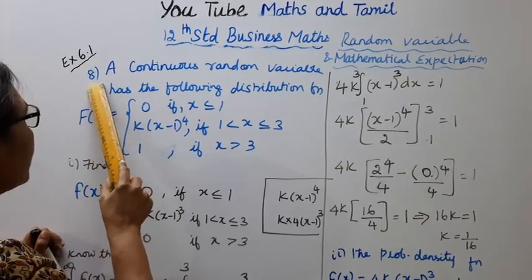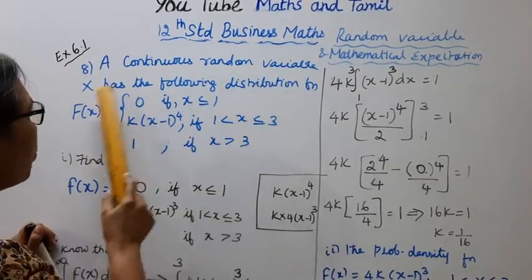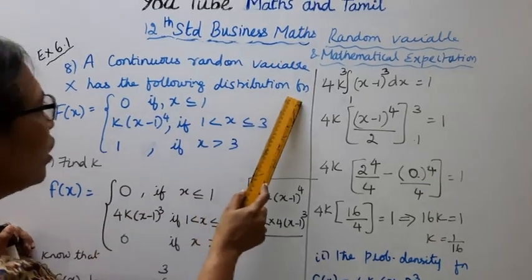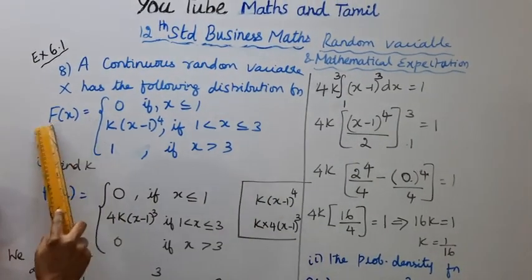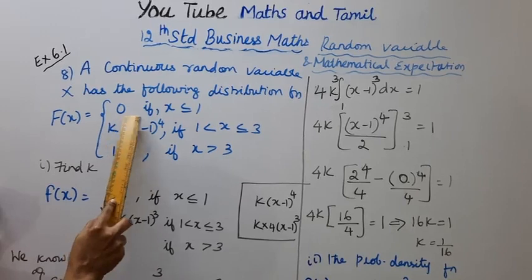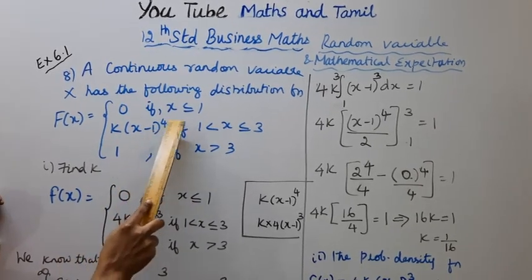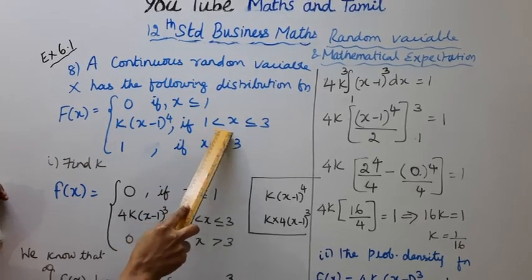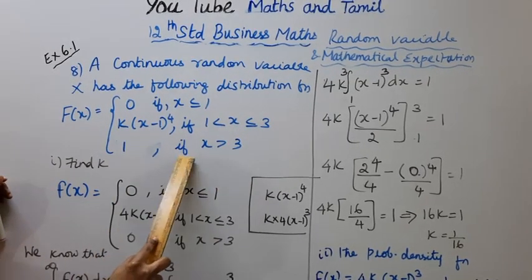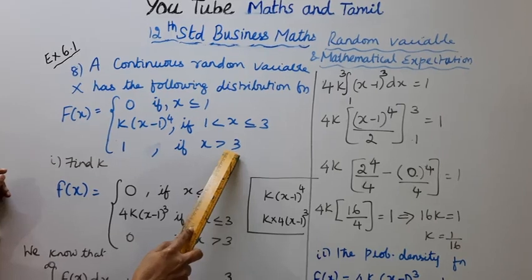Exercise 6.18. A continuous random variable x has the following distribution function: F(x) equals 0 if x less than or equal to 1, k(x-1) to the power 4 if 1 less than x less than or equal to 3, and 1 if x is greater than 3.